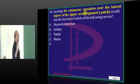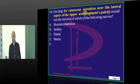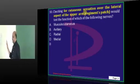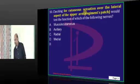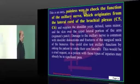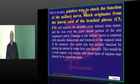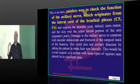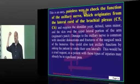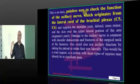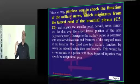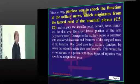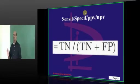Coming to the lateral aspect of the upper arm — who is responsible for innervation? It is the axillary nerve that is mainly responsible. That is the reason whenever somebody has a surgical neck of humerus fracture involving the axillary nerve, you cannot test abduction as it is very painful. Instead, you can test anesthesia in the regimental badge area as a test of whether the axillary nerve is injured.